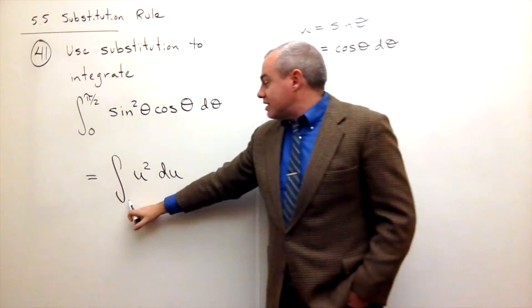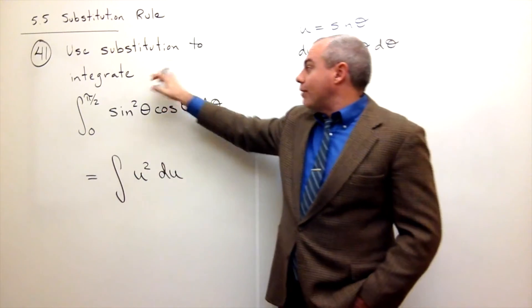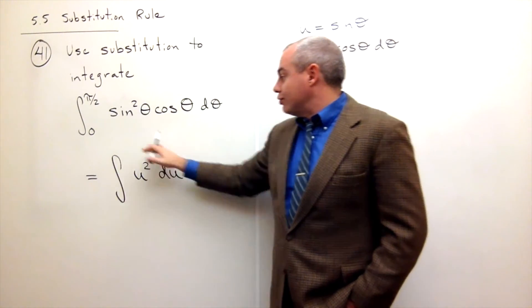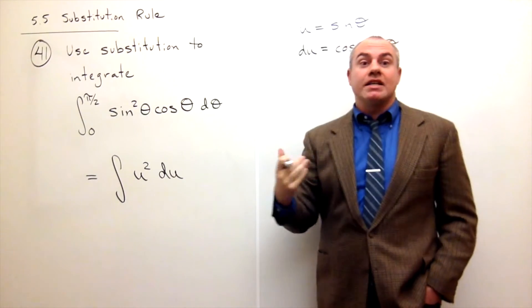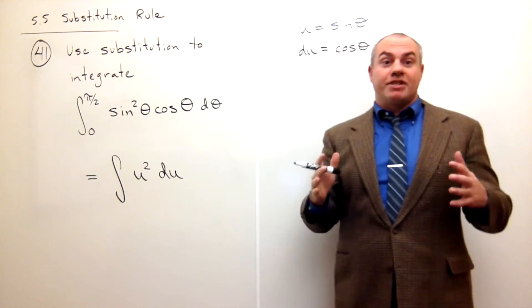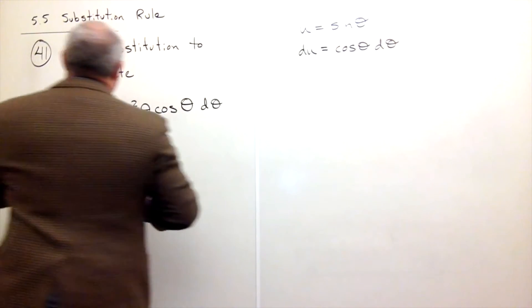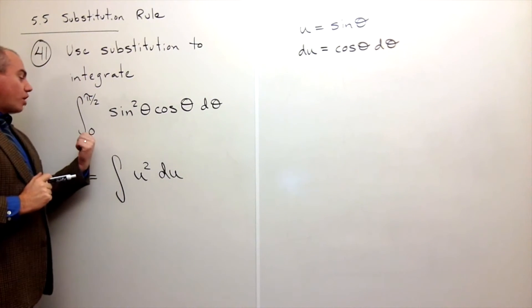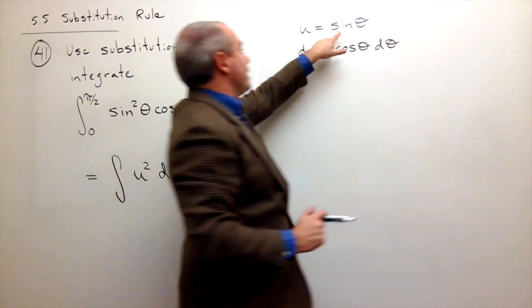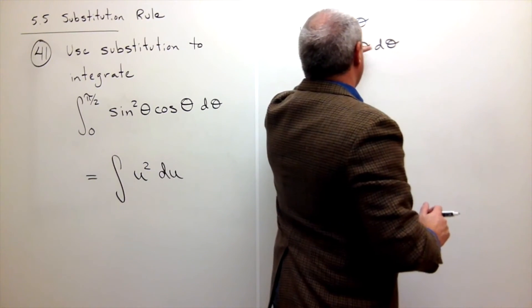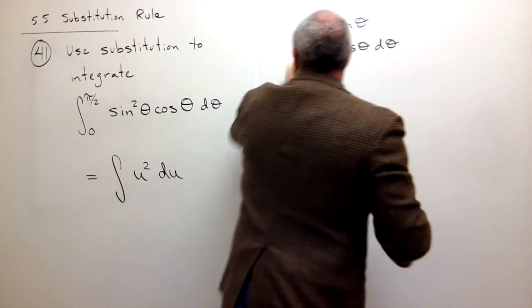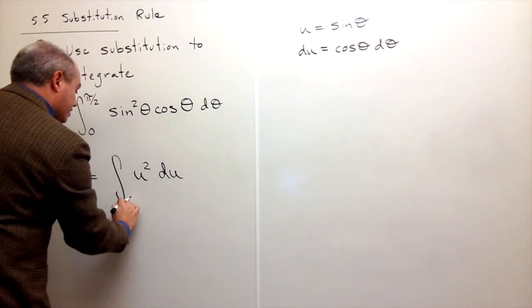I still need limits of integration. I changed from theta world into u world, and so I need to change my limits of integration. What should they be? Well what I'm going to do is I'm going to say well theta started at zero. So what does u start at? If theta is zero then I get sine of zero and sine of zero is zero. So this thing starts at zero.